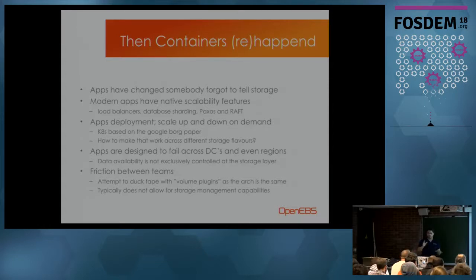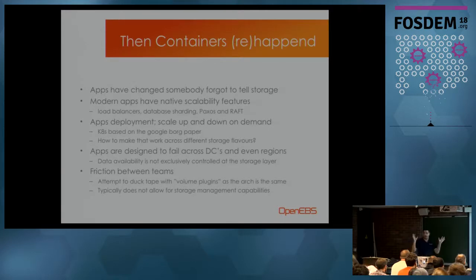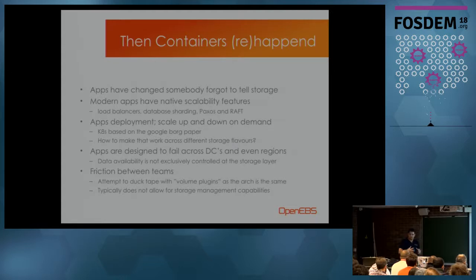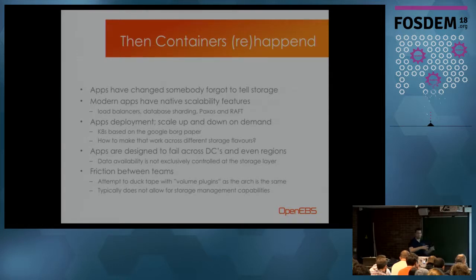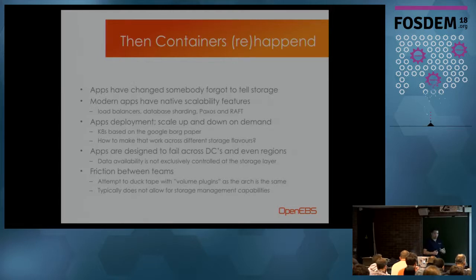Developers got smarter — they accounted for failure. People also started writing software that is DC-aware and even region-aware, very much fueled by AWS services with its regions. But the friction between teams is still there, probably even more so because workloads come and go. Typically you have one VM with one mount point, but now if you have 100,000 containers spinning up and two weeks later they're all gone, you have all these mount points, and those systems have a limit on how many mount points they can serve.